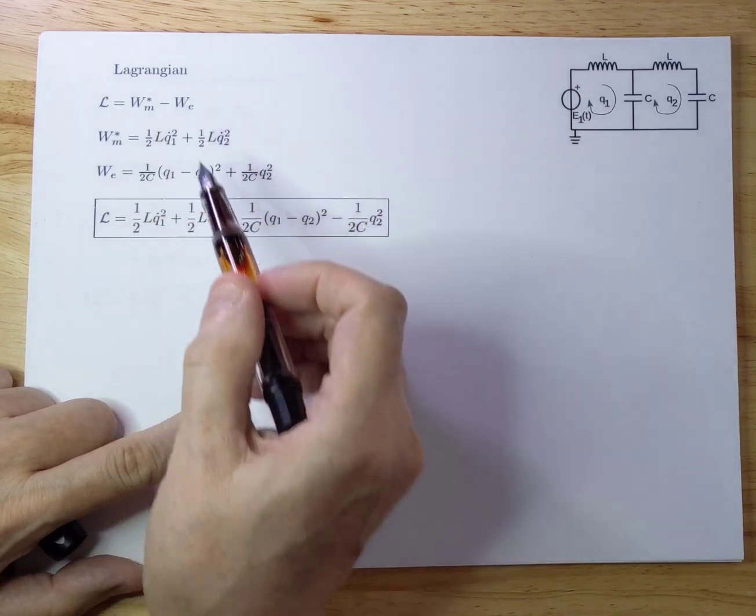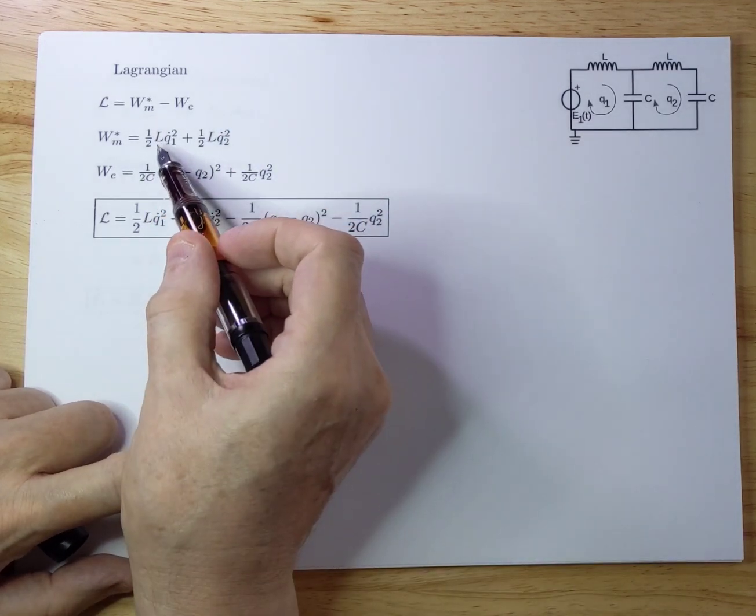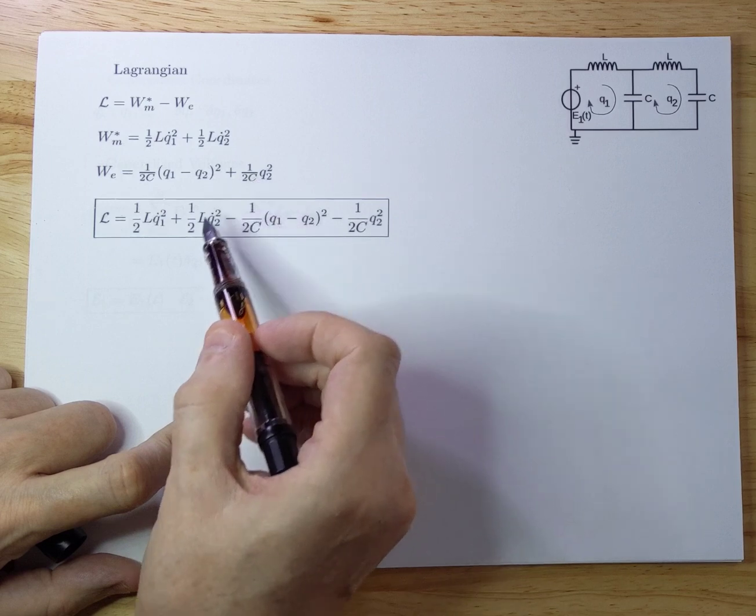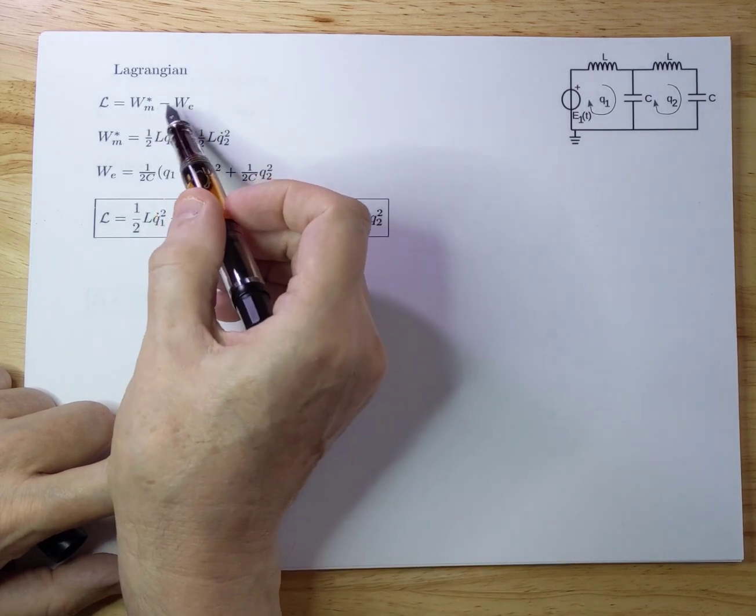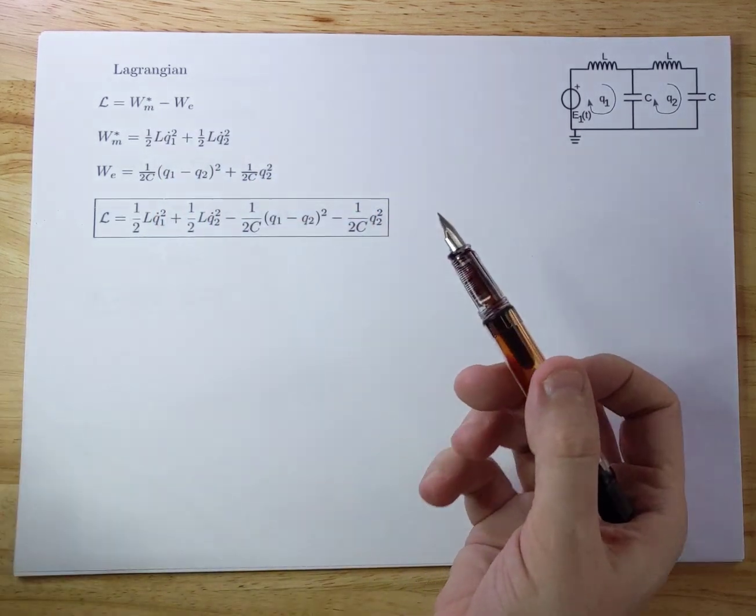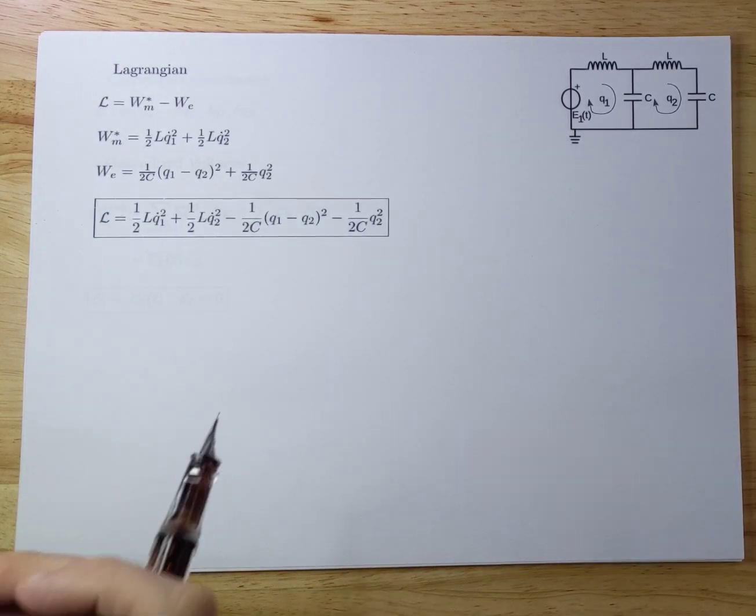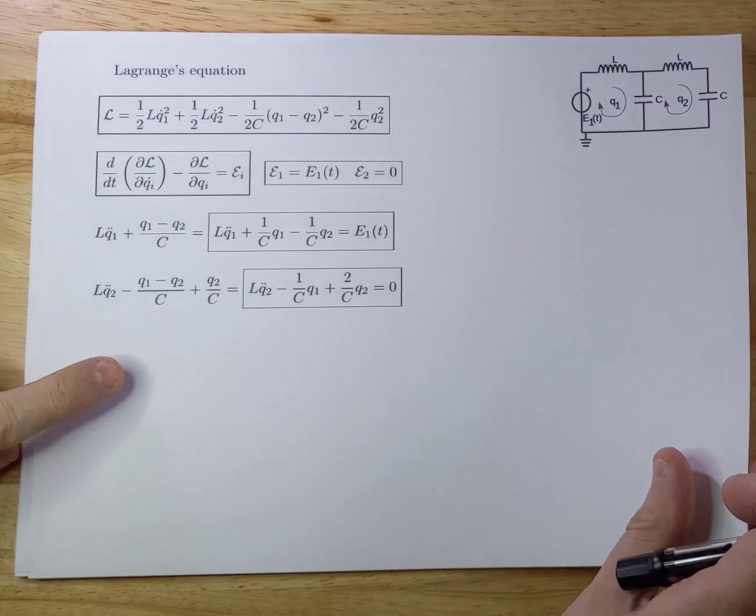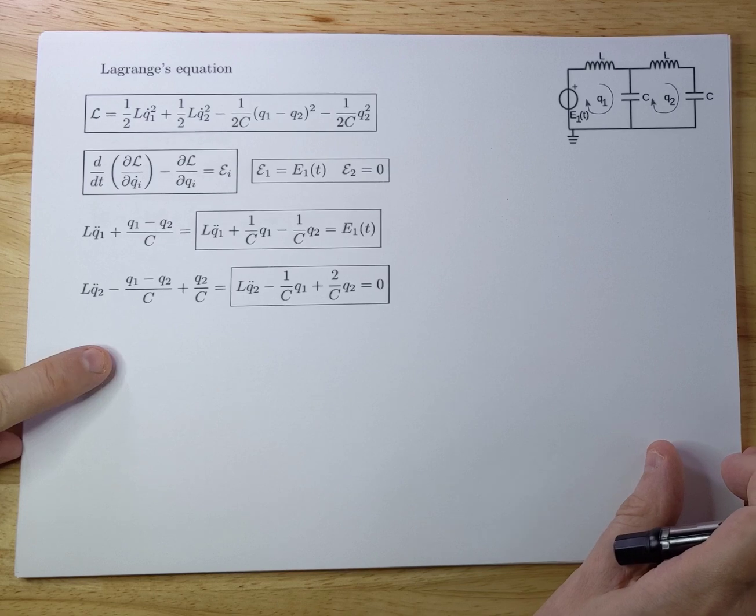So now you have to subtract those to get the Lagrangian. And you subtract this factor from this factor. T minus V, essentially. And you get the Lagrangian. So now we have the Lagrangian, and we can try to solve that equation.